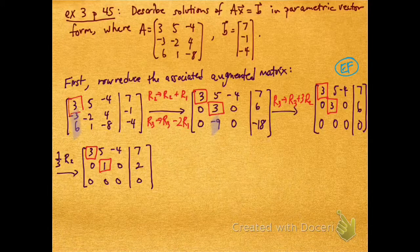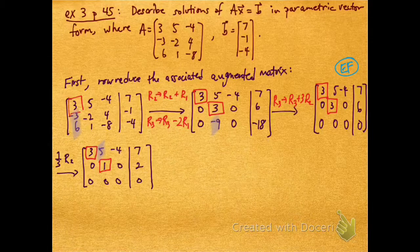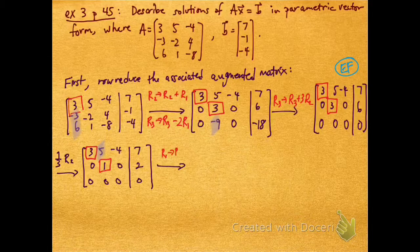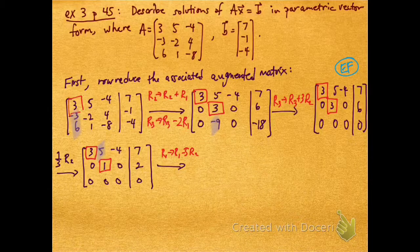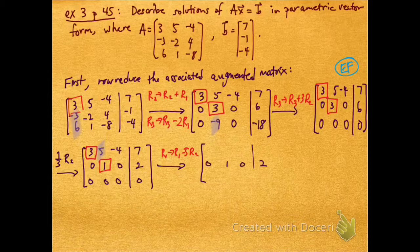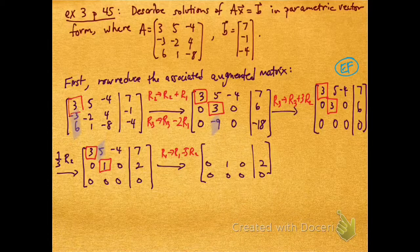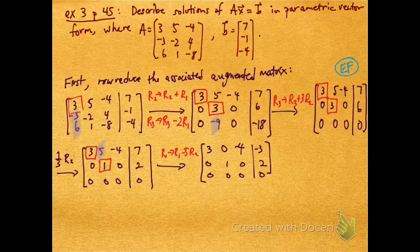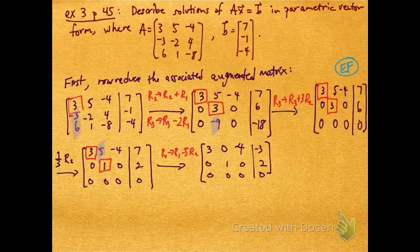Now, I'm going to use this 1 that I've created and kill off all the entries above. So in this case, it's a 5. I can achieve that by replacing row 1 with row 1 minus 5 row 2. The third row stays the same, the second row stays the same, and the first row becomes 3, 0, -4, -3.